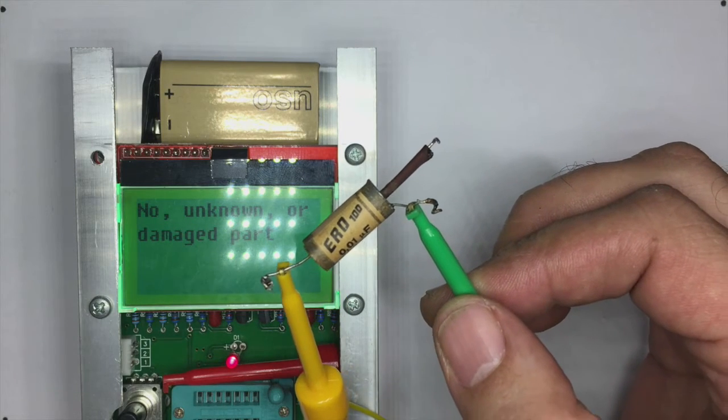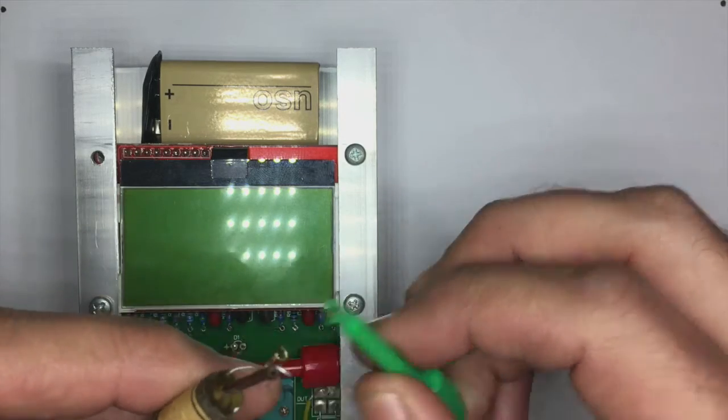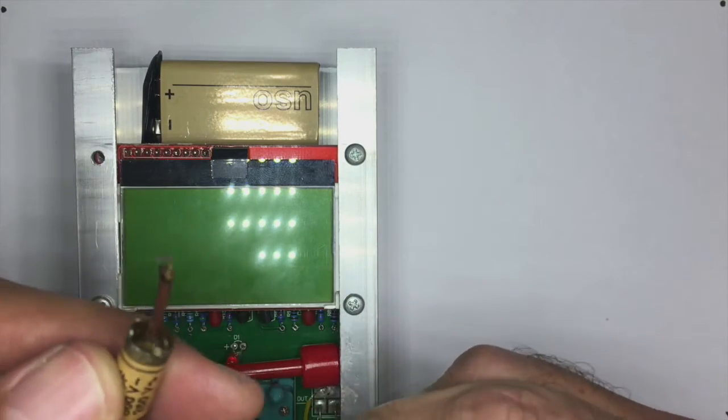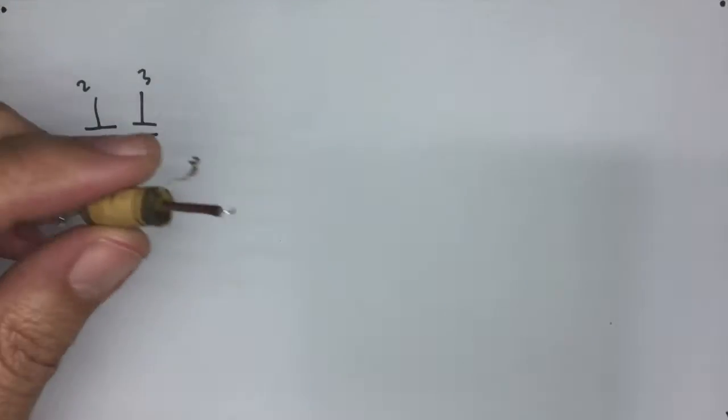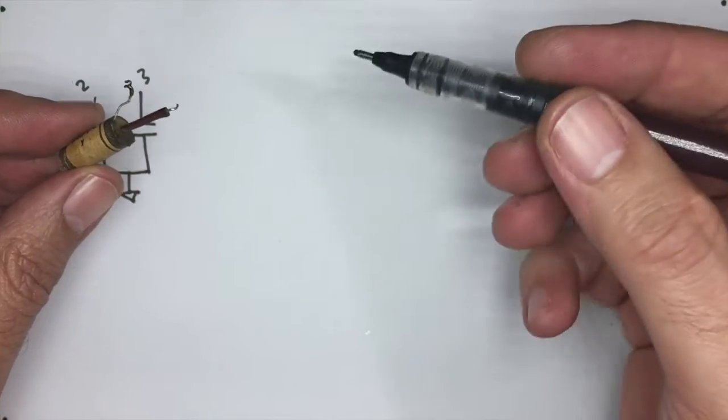If anything, you might read a very low capacitance, like 20 picofarads, 10 picofarads or something. This one gives us nothing. So what we are seeing here is different to the one we've seen before, the double one.